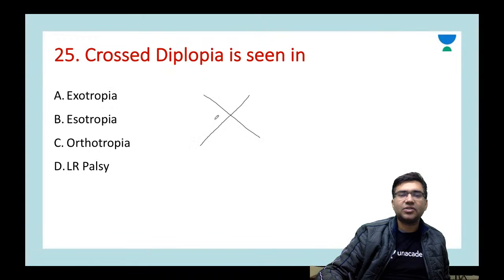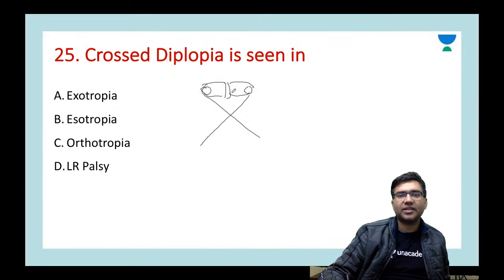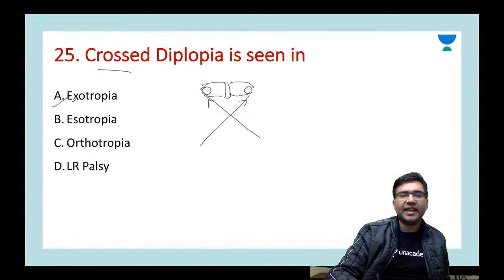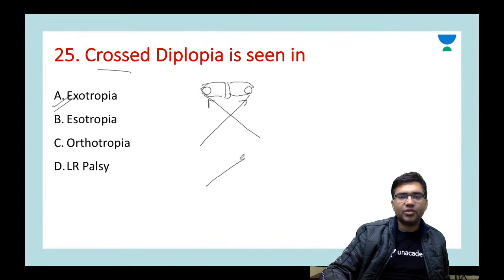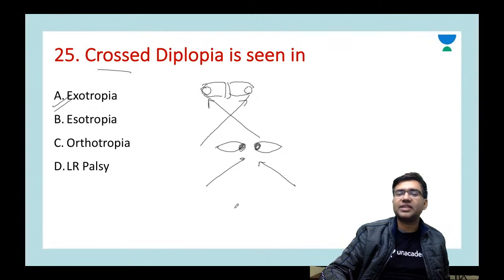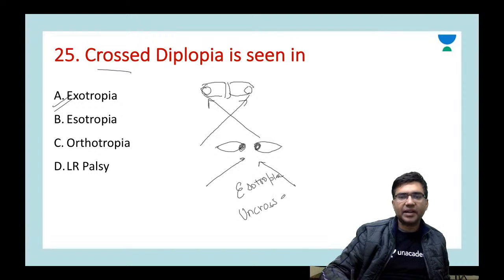Next mnemonic: crossed diplopia is seen in which condition? When you have a cross, one eye looks one way and the other eye looks the other way — this resembles a divergent squint. So crossed diplopia is seen in exotropia. For esotropia (converging eyes), you get uncrossed diplopia.